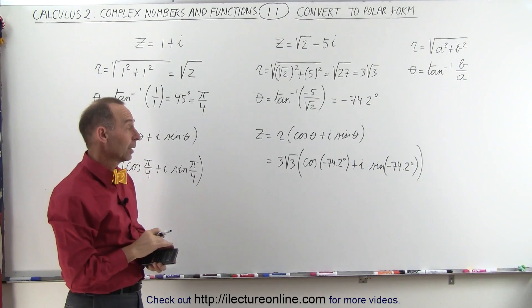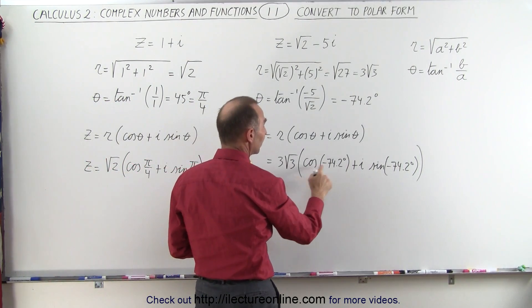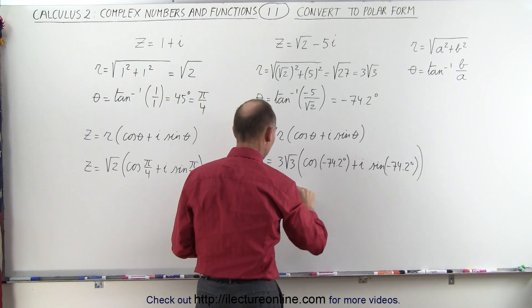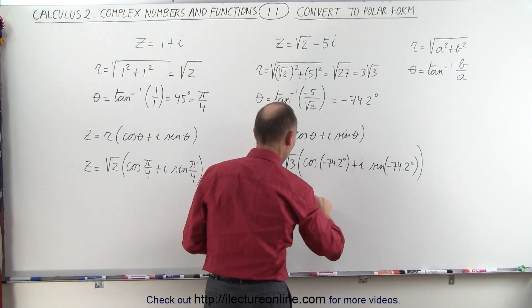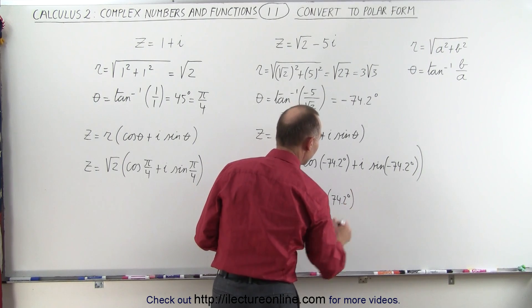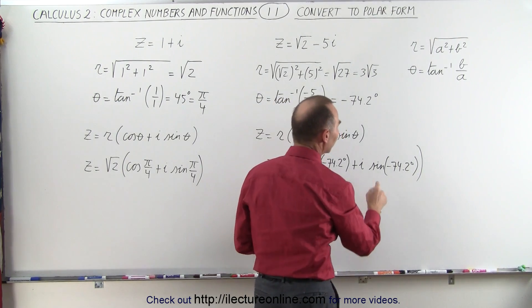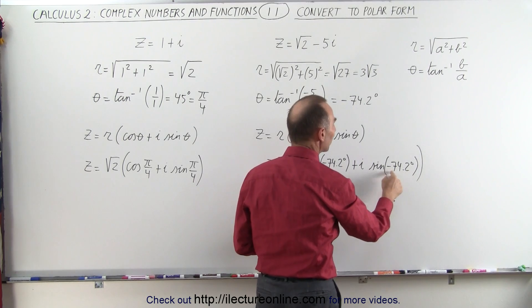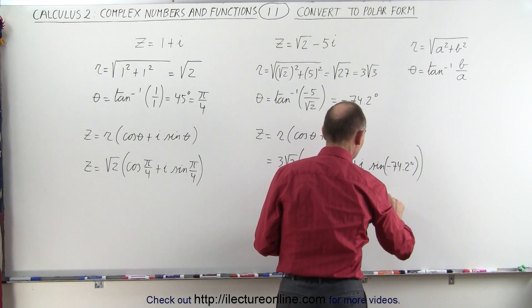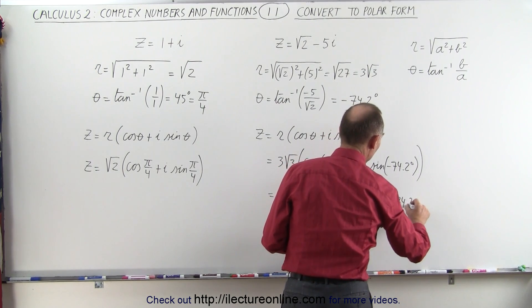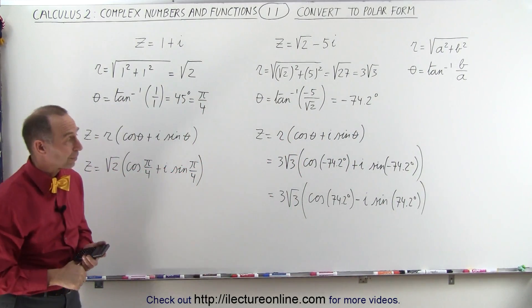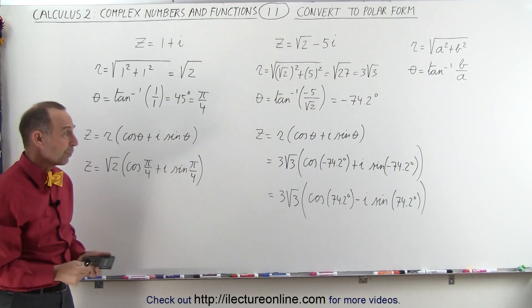We could simplify this a little bit because the cosine of a negative angle is the same as the cosine of a positive angle. So this can be written as 3 times the square root of 3 times the cosine of positive 74.2 degrees. And the sine of a negative angle is equal to negative the sine of the positive angle, so this could also be written as minus i times the sine of positive 74.2 degrees. Notice that gives you really the exact same result, but this illustrates we could write it both ways.